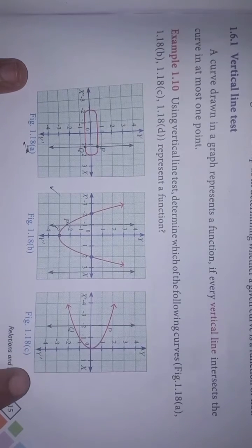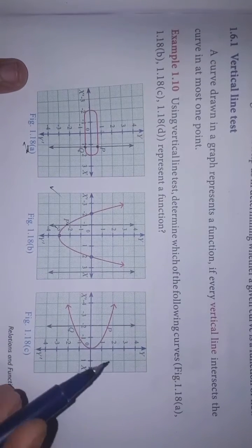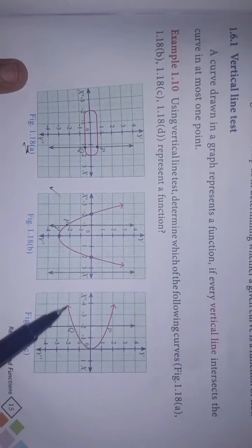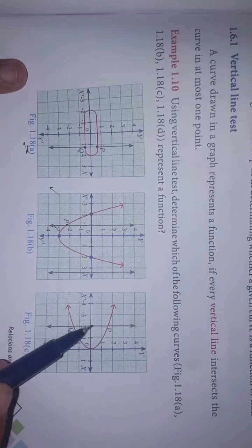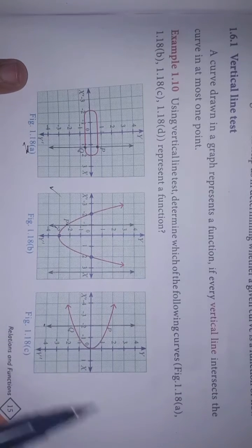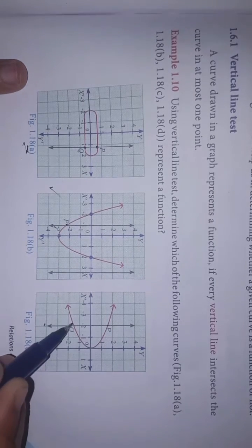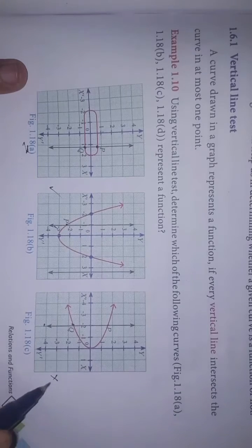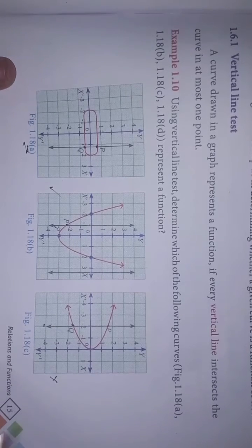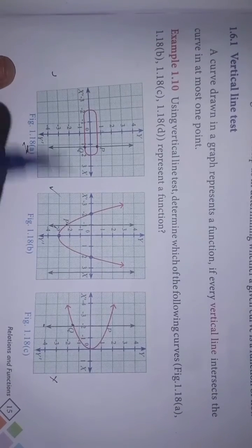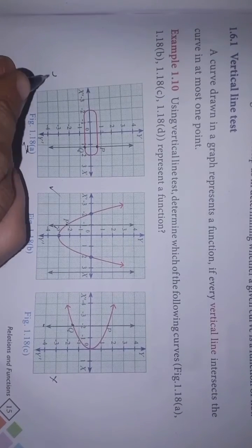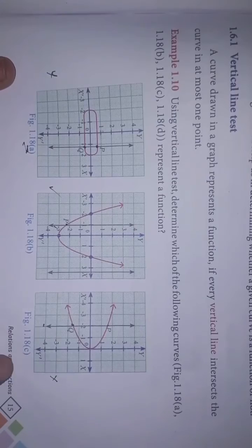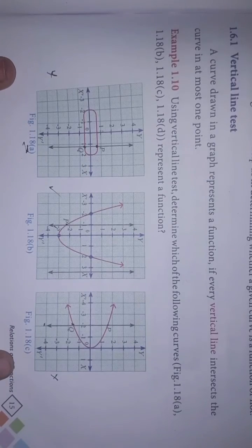Next, option C. The curve has a vertical line. Since P and Q have 2 points, this is not a function. So A is not a function, B is a function, and C is not a function.